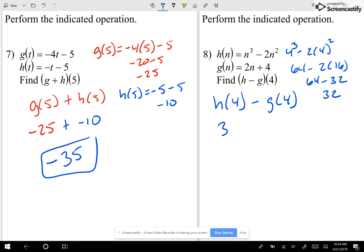So h of 4 is 32 minus, let me find out what g of 4 is. g of 4 is 2 times 4 plus 4. So I have 8 plus 4, better known as 12. So now here I have 32 minus 12, which I'm just going to call 20.